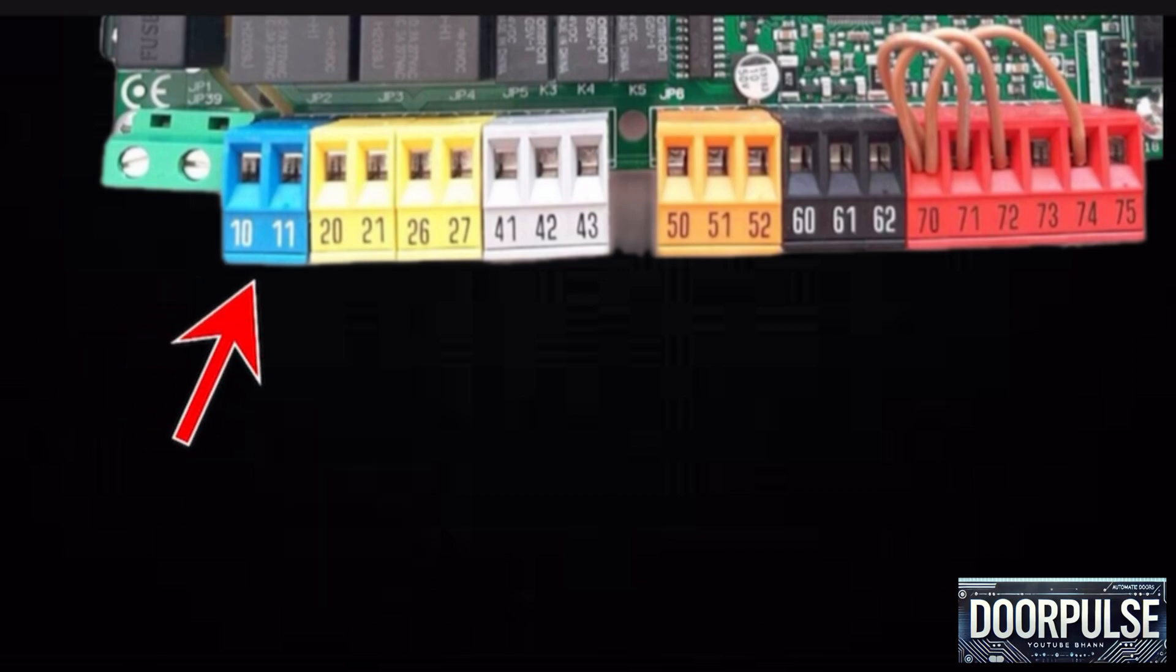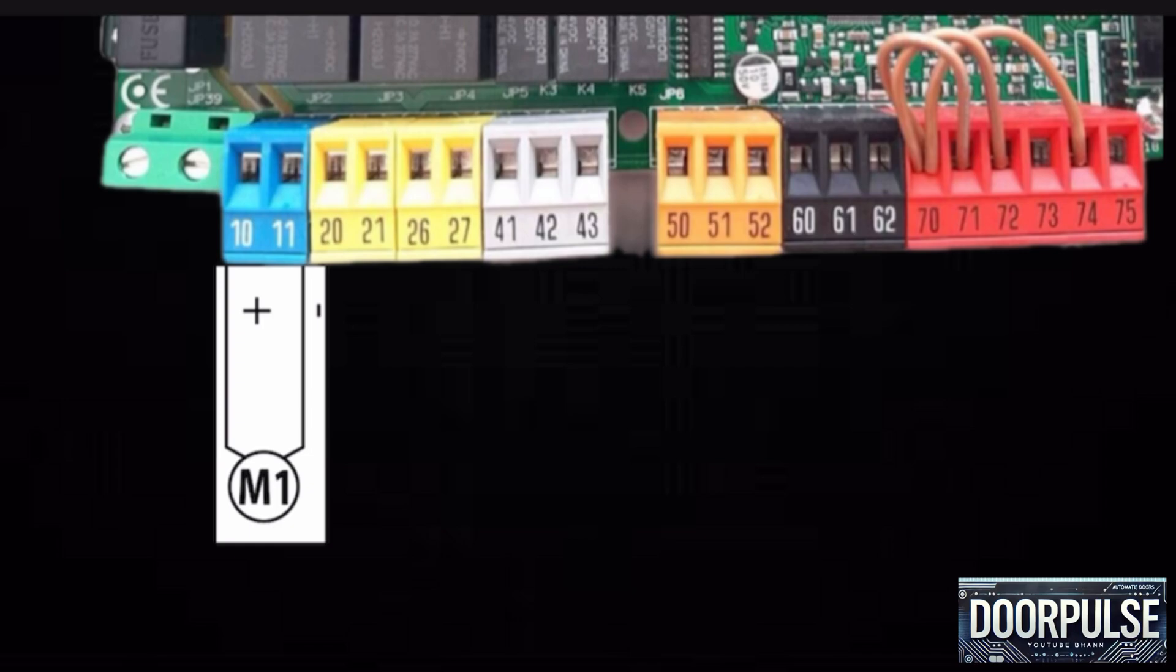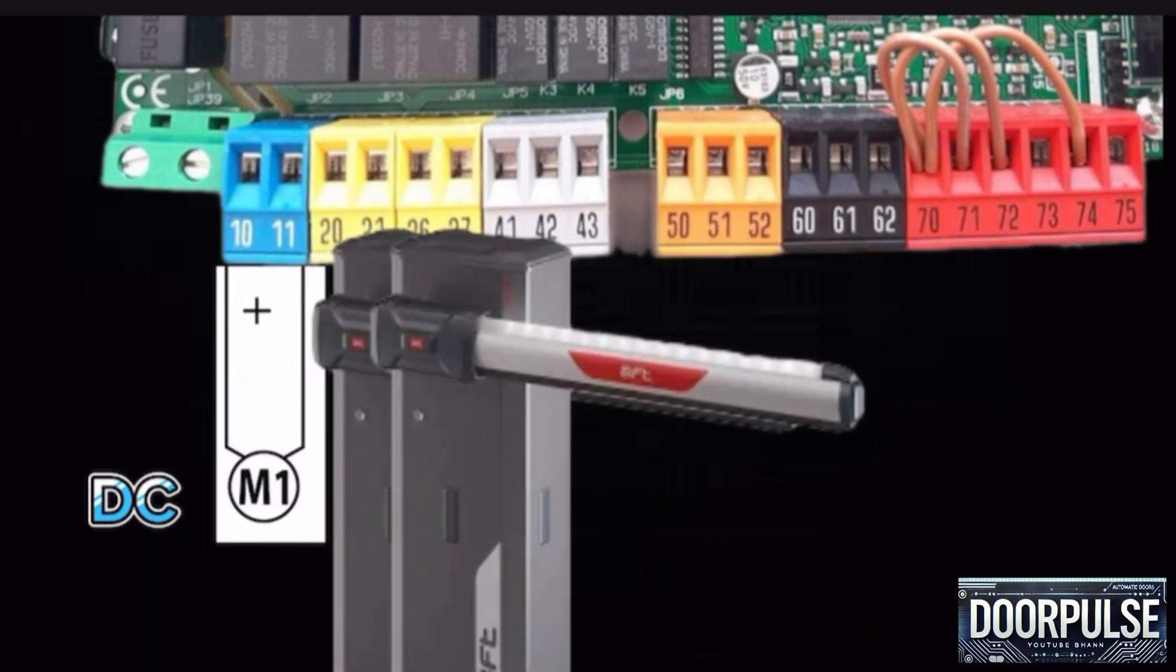JP2 block: a block for motor connection. This is already connected. This block gives DC power supply to motor, connects to the motor that operates the barrier arm, controlling its movement.